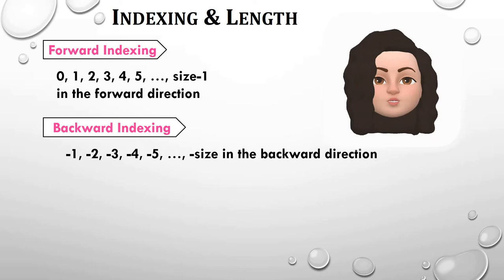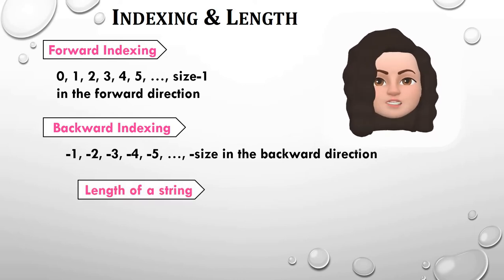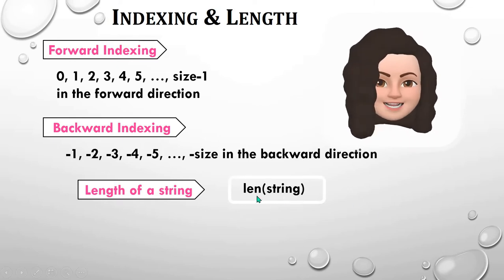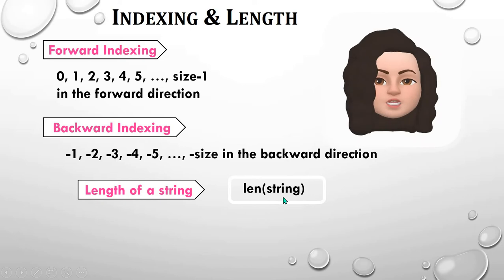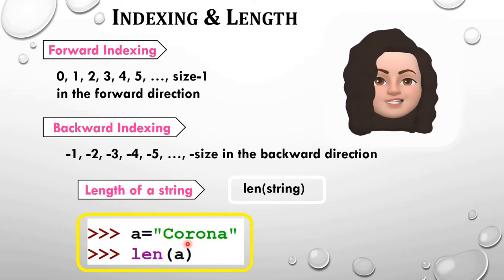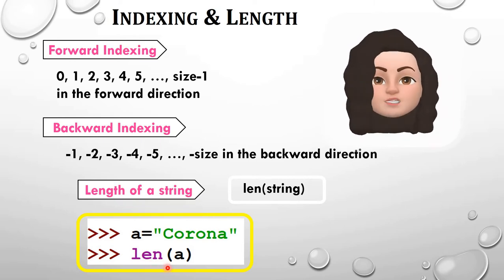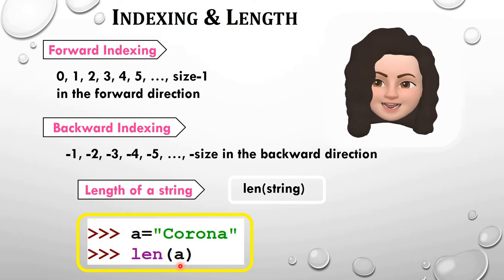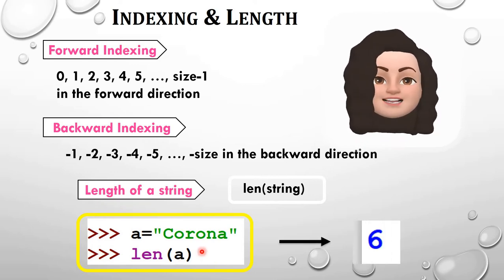Now, how to calculate the length of a string? The length of a string is calculated using the function len — L-E-N. You have to give len(), with the string or the name of the variable in parentheses. For example, I have declared a variable called a which holds the value 'corona'. Using len(a), the answer is 6, because length counts the number of characters in the string.